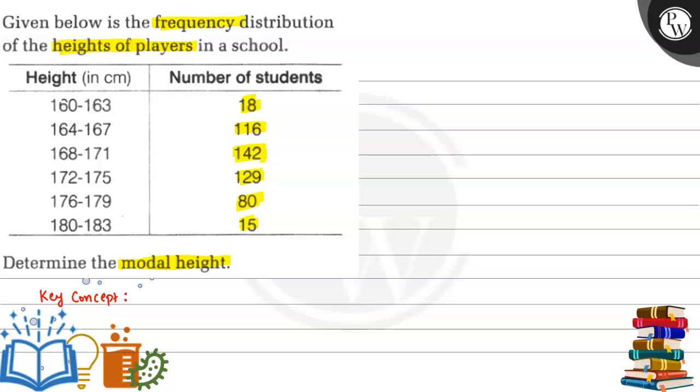If we see the consecutive class intervals, 160 to 163 and the next is 164 to 167, we can see that we will get 2 corresponding to the difference between class intervals.